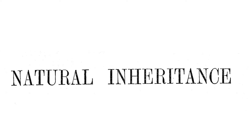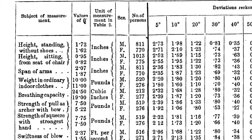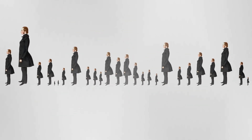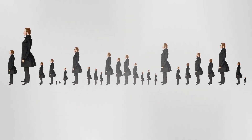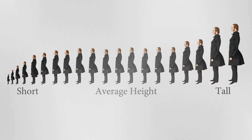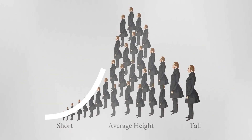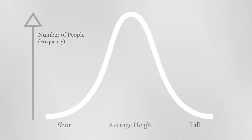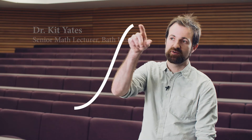He was particularly curious about why certain human characteristics, such as height, instead of randomly varying within a population, appeared to vary in a very orderly, recognisable way, and specifically according to something called a normal distribution. The normal distribution is often known as the bell curve — a curve which has a shape like a bell, very high in the middle and low towards the edges.